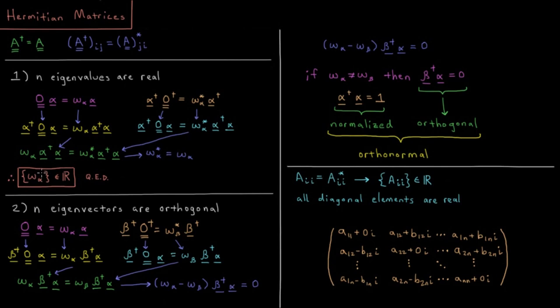This is important because, just as in the rest of quantum mechanics where we represent physical properties by operators, we represent our operators here as matrices. The values that we can measure — things like energy, position, momentum — have to be real numbers. The values we measure are always going to be eigenvalues of these matrices, so it makes sense that any measured value is real. All matrices representing operators in computational chemistry will have real eigenvalues because they are Hermitian.